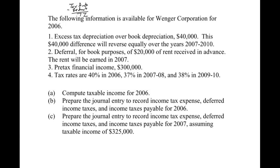If we have more taxable amounts because of a difference, we'll have more taxable income. If we have less taxable amounts, we'll have less taxable income. If we have more deductions — meaning we're subtracting more deductions — that number will be smaller, taxable income will be smaller. And vice versa, if we're subtracting fewer deductions, taxable income will be greater.